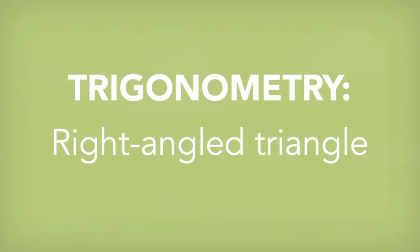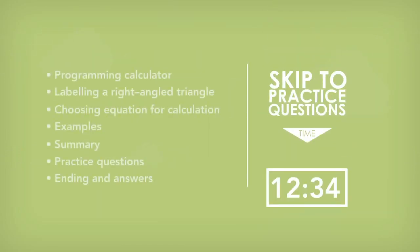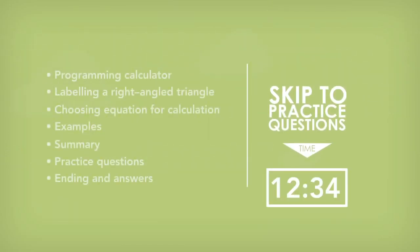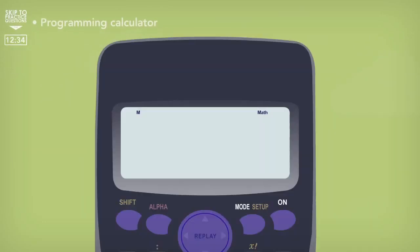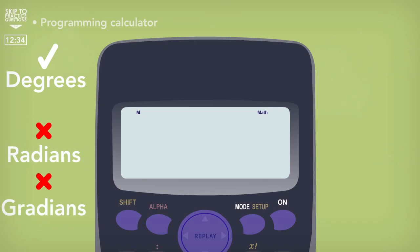Trigonometry for right angle triangles. For this topic you will need a scientific calculator that has been programmed correctly. When using a scientific calculator you need to make sure that it's set to degrees and not radians or gradients.